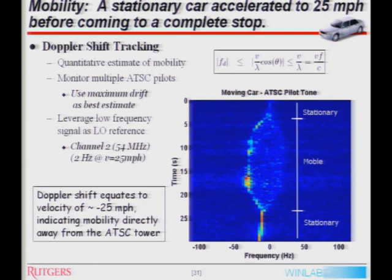Because I never know if I'm moving toward a tower, directly away from it, or perpendicular to the signal, by using more and more signals I can actually come up with a better estimate. In this experiment, I was moving pretty much directly away from the tower. You can see my Doppler shift equates to a velocity of about minus 25 miles per hour, which comes out very well with the experiment.